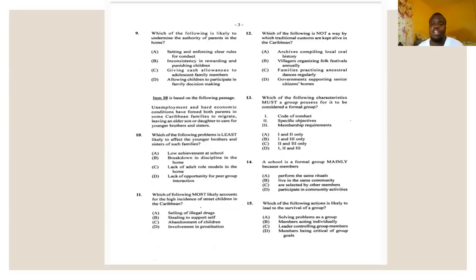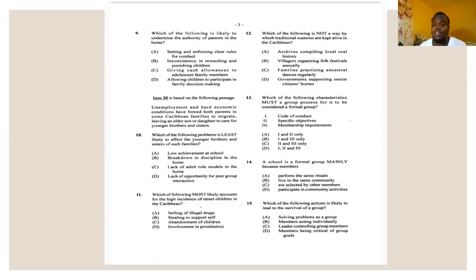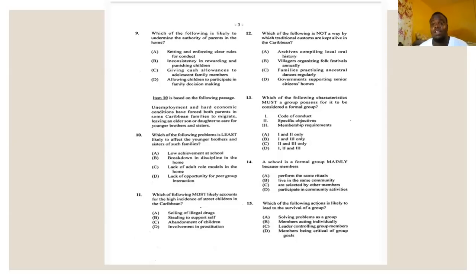Number twelve says: which of the following is NOT a way by which traditional customs are kept alive in the Caribbean? A: archives compiling local oral history — saves them for future generations. B: villages organizing folk festivals annually — traditional dances can be seen and kept alive. C: families practicing ancestral dances regularly — younger ones can learn and keep doing them. D: government supporting senior citizens homes — has nothing to do with traditional customs. The answer for number twelve is D.